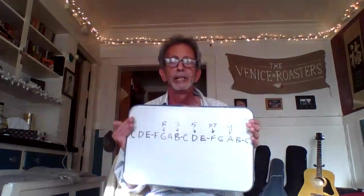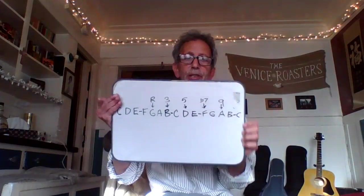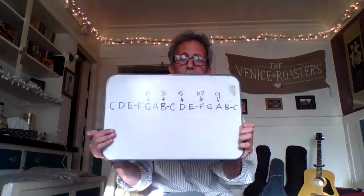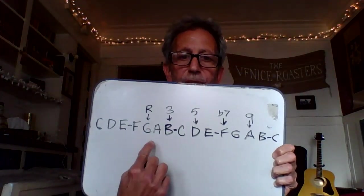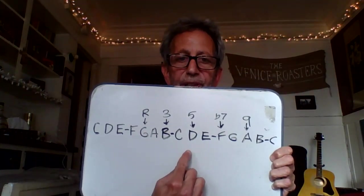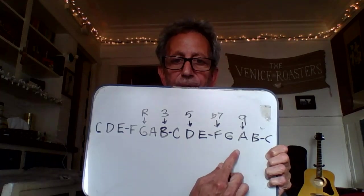Root, third, fifth, natural seven for G major seven. But then we lower that F sharp down to F, and we get G7 with the flatted seventh. Back to the issue of why it's not called a major minor chord: we build the chord up — root, third, fifth, seventh, and ninth.